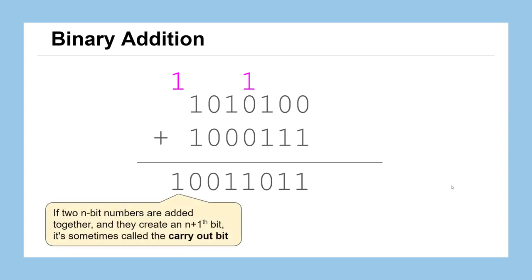This last bit, this new bit that gets added on to the end here, is often called the carryout bit. We'll see that these binary operations are often carried out using circuits in an actual physical piece of hardware, like a computer processor.